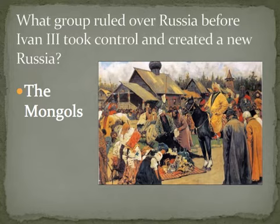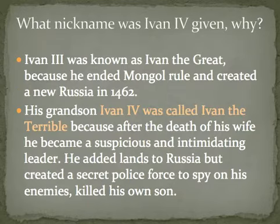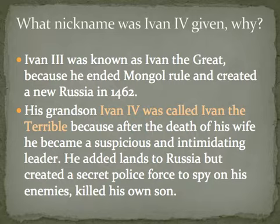Before Ivan the Third took control and created a new Russia, the Mongols ruled over Russia. Ivan the Third was known as Ivan the Great because he ended Mongol rule. His grandson, Ivan the Fourth, was called Ivan the Terrible because after the death of his wife he became a suspicious and intimidating leader. He added lands to Russia but created a secret police force to spy on his enemies and even killed his own son.